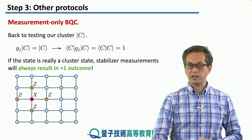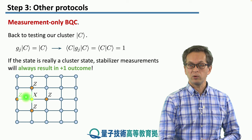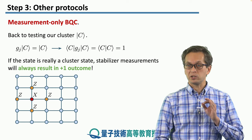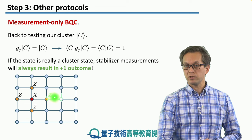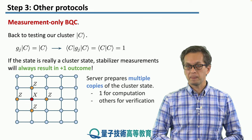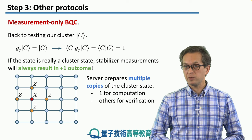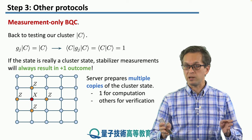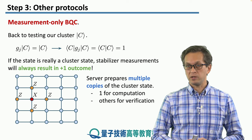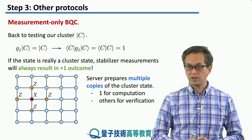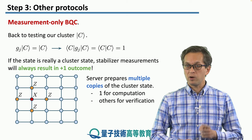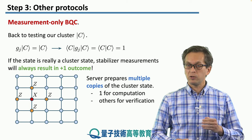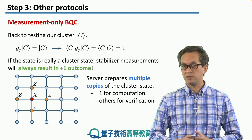For example, the client can check the stabilizer measurement on a red qubit by measuring that qubit in the X basis, and its neighboring qubits in the Z basis. If the parity — the product of the measurement outcomes — is plus one, then the stabilizer measurement outcome is also plus one. The server prepares multiple copies of the cluster state: one copy for computation and all others for verification to guarantee integrity.